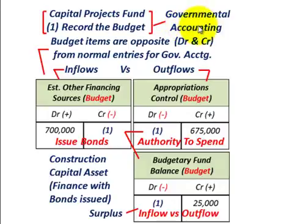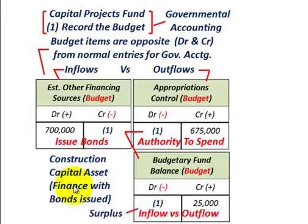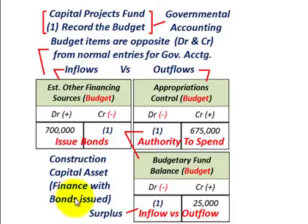What we're going to be going over here is governmental accounting, where we're going to be financing the construction of a capital asset. This is where a city or municipality is going to build a new building and finance it with long-term bonds. We're going to look at how to account for these bonds being issued both at a premium and at a discount.